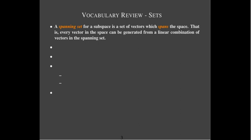Let's start with a spanning set. A spanning set refers to a subspace, and a spanning set for a subspace is a set of vectors that spans the set. That means every vector in the subspace can be generated from a linear combination of vectors in the spanning set.